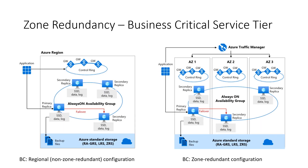When it comes to Zone Redundant architecture for the Business Critical Service Tier, if we compare the default regional or non-Zone Redundant architecture to the Zone Redundant architecture, we can see that since the Zone Redundant configuration is aware of multiple availability zones, we can spread the secondary replicas of the service across the availability zones to ensure that if any one of the AZs goes down, it does not bring all of the replicas.